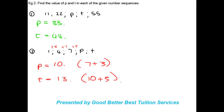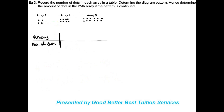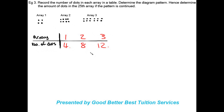Now we'll move on to the last example. They say: record the number of dots in each array in a table, determine the diagram pattern, and hence determine the number of dots in the 25th array. We have array 1, array 2, and array 3. Array 1 has 4 dots, array 2 has 8 dots, and array 3 has 12 dots. We've successfully recorded our values into a table.